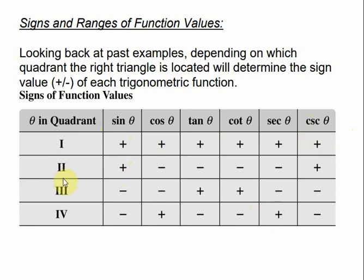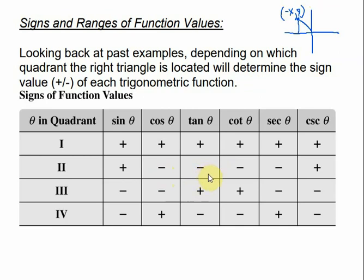But if it's located in quadrant 2 — if we had point P located somewhere in quadrant 2 with a triangle — then sine would be positive, since sine is our y value and y would be positive. Cosine is negative because x is negative. Tangent is going to be negative because tangent is y over x, so one is positive and one is negative. The reciprocal functions follow the same signs: if sine is positive, its reciprocal is positive; cosine is negative, its reciprocal is negative; tangent is negative, its reciprocal is negative.